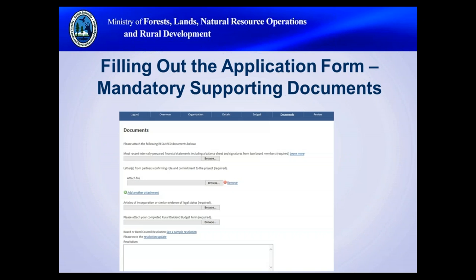Along with application answers, mandatory supporting documentation must also be included. This is listed in detail on page 15 of the program guide. Mandatory documents must be specific to the legal entity applying for funding and cannot be from a related or parent organization. Supporting documentation is submitted through the online application form, but there is a limit of approximately 10 documents depending on file size; additional documents can be submitted via email.